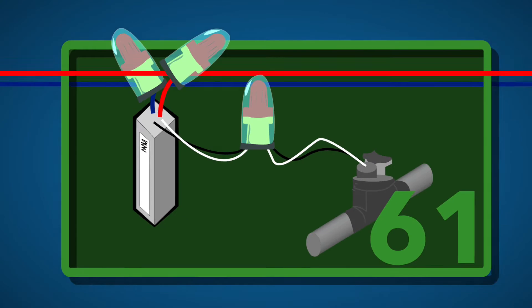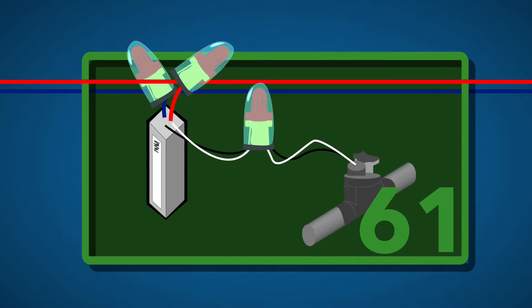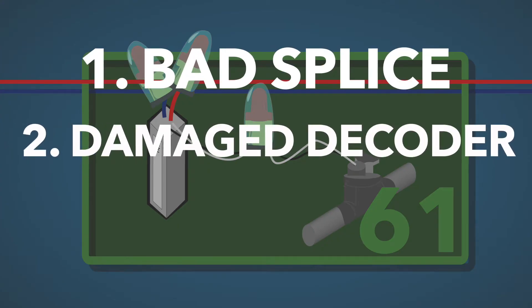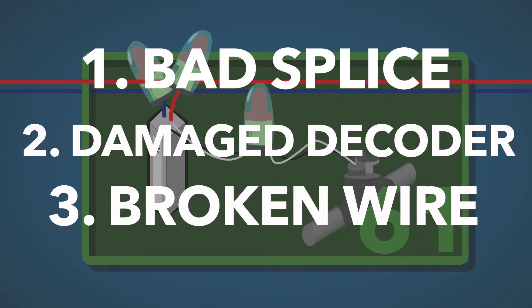Taking readings in this 61st valve box, we will probably find something other than 39 mA after this decoder. The troubleshooter can replace the splices or change the decoder to attempt to isolate the problem. It can be a bad splice, a damaged or bad decoder, or a problem in the wire itself.